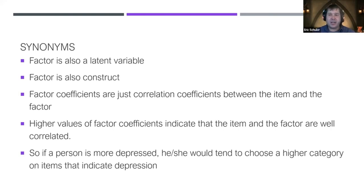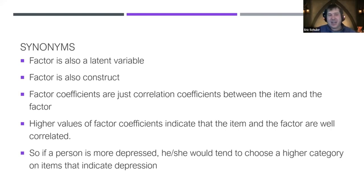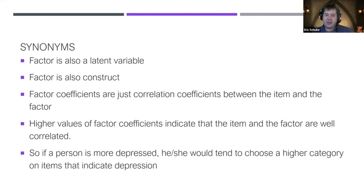If we think of it as a continuum, on one side we have exploratory factor analysis and on the other we have confirmatory. You can also have exploratory confirmatory or more constrained exploratory analyses. Factor coefficients represent the correlation between an item and a factor — higher values indicate they're well correlated, as they should be.